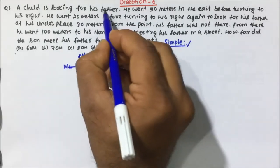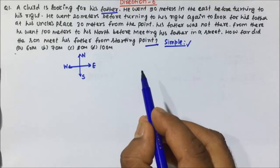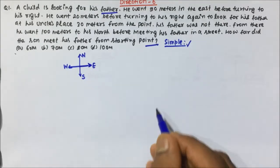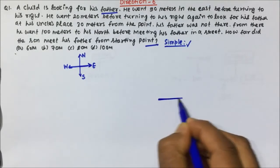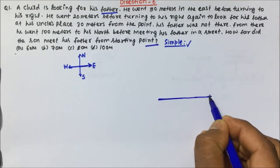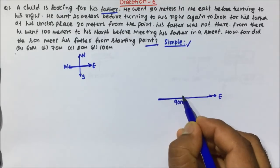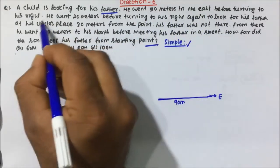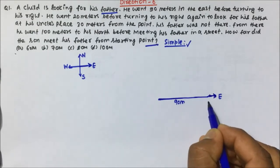A child is looking for his father. He went 90 meters in the east. East is this direction, so the child is going 90 meters in the east — this is east and this distance will be 90 meters. He went 90 meters in the east before turning to his right, which means after going in the east direction for 90 meters, the child will take a right.